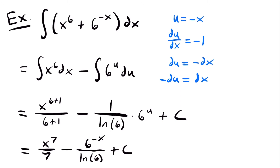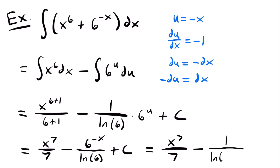That is an acceptable answer, but we can simplify further. We can move 6 to the negative x power to the denominator, making the exponent positive. So the final answer is x to the seventh over 7 minus 1 divided by the natural log of 6 times 6 to the positive x power plus c.